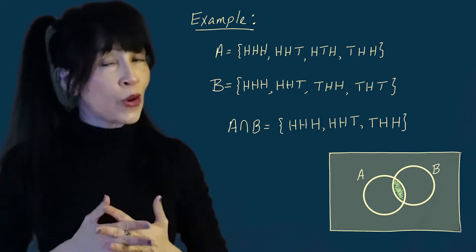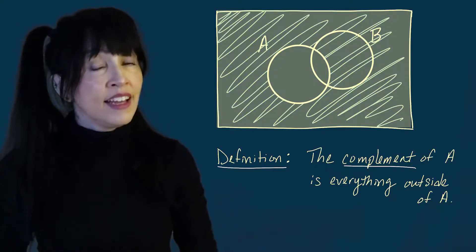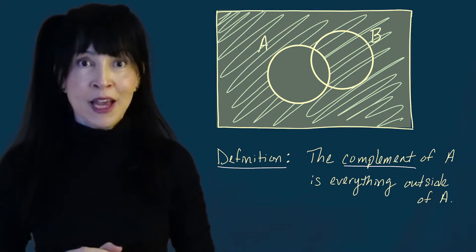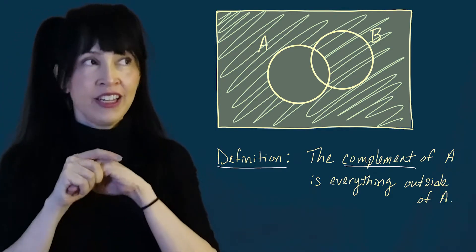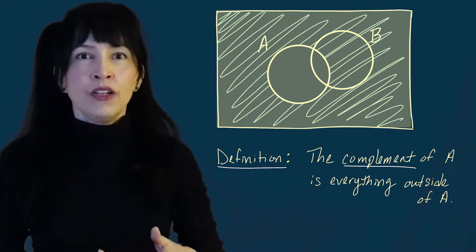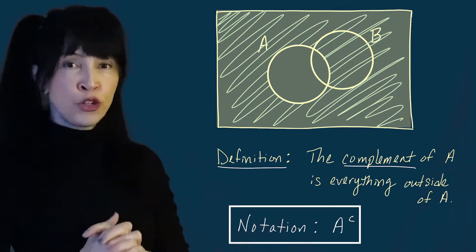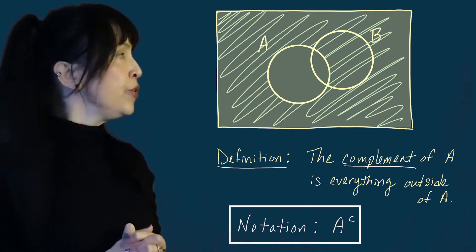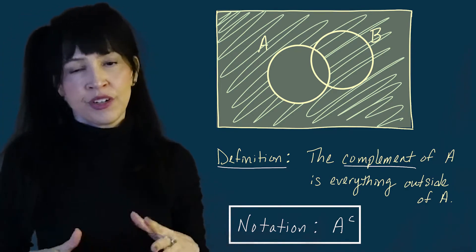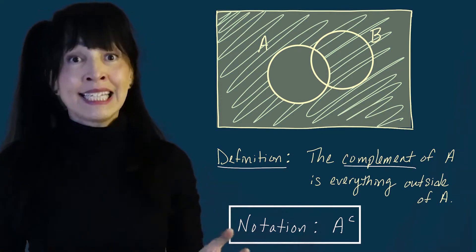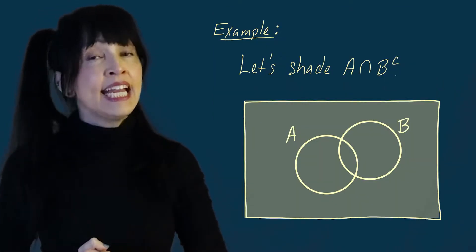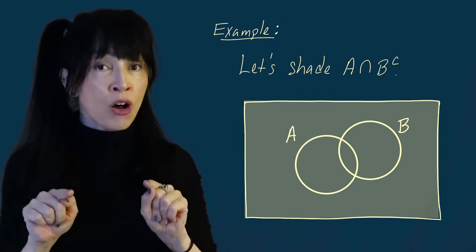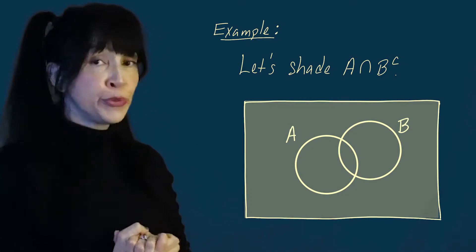Next, the complement of set or event A is denoted by A with a superscript C. The complement has nothing to do with set B — it's simply everything outside of A, whether or not B is even drawn. So shading everything outside of A ends up covering some of B as well. As another example, the set A intersected with the complement of B is everything inside A and also outside of B — this specific region in the diagram.